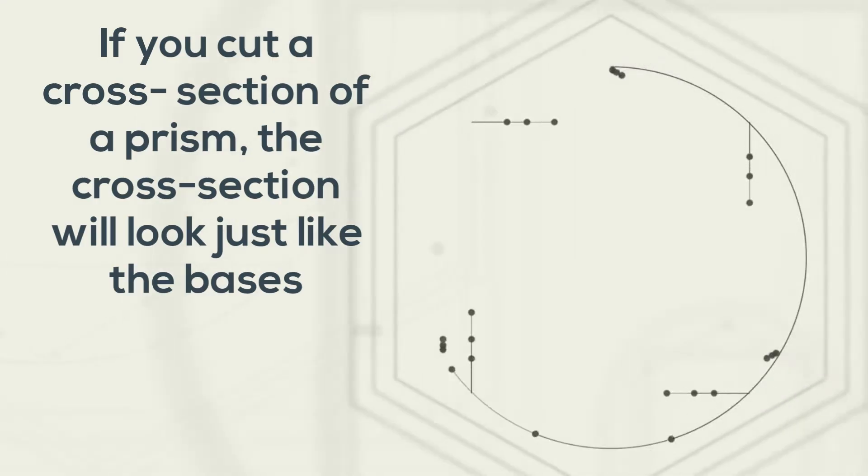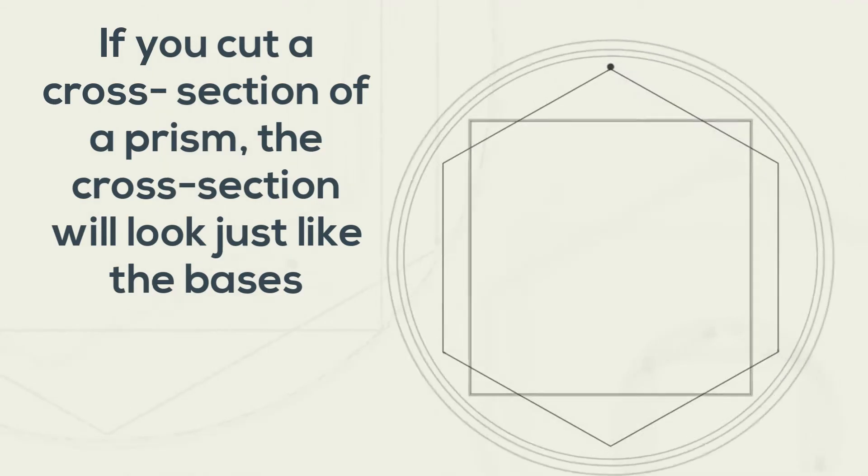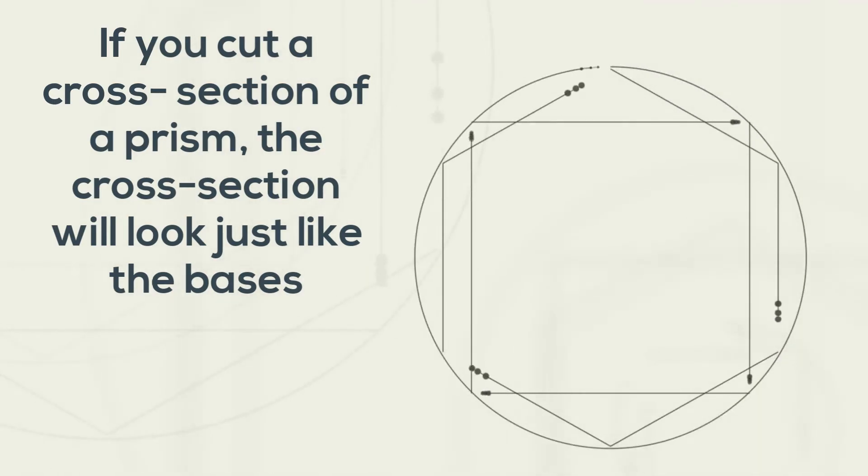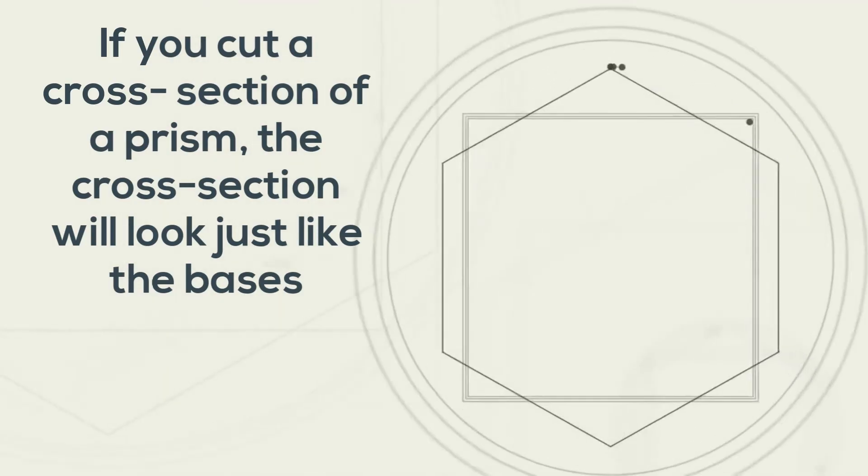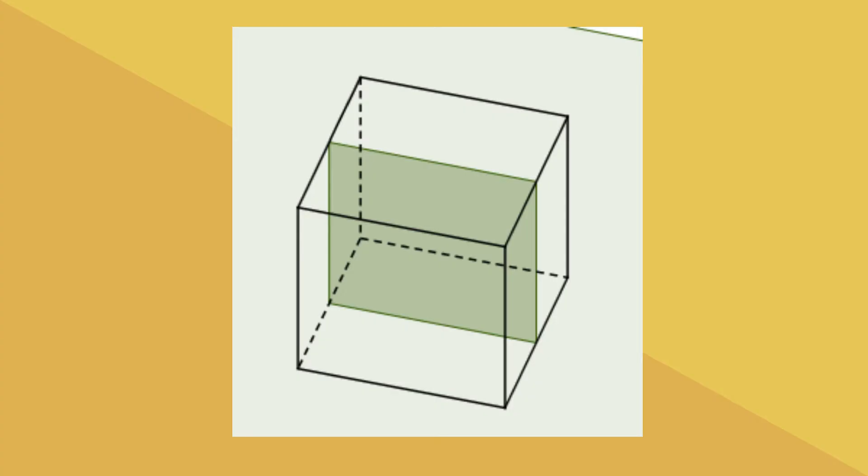The next property of a prism is if you cut a cross section of a prism, the cross section will look just like the bases. And here's what I'm talking about. You have a rectangular prism and look at the cross section. It's the same as the two bases.